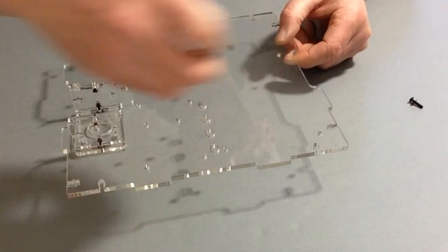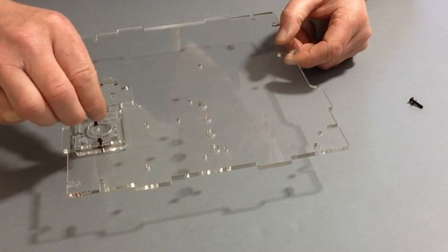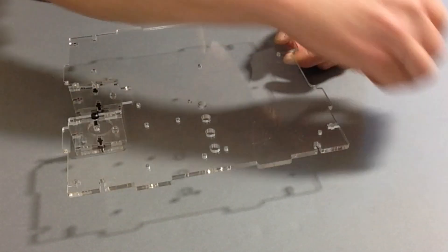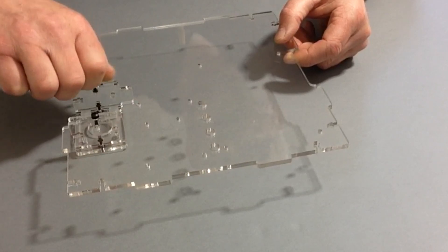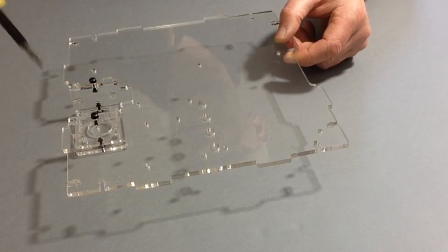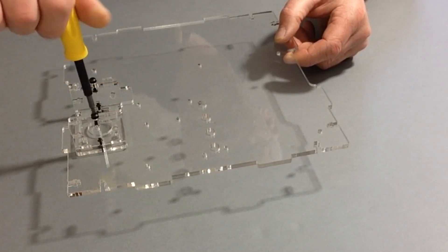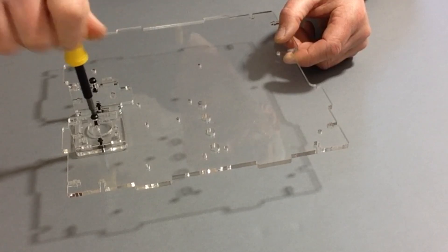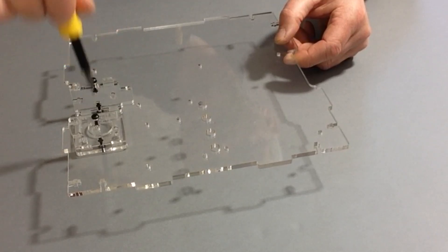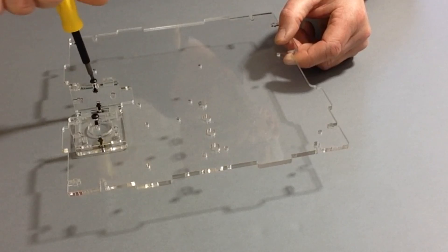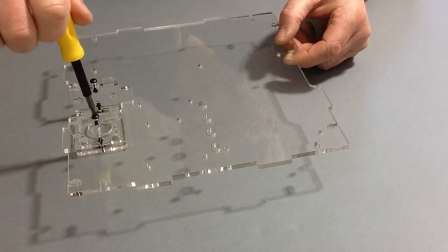We're going to take the two thrust screws with the washers as before, and once again, we're just gently going to tighten those up as before, just nipping them up without over-tightening them.